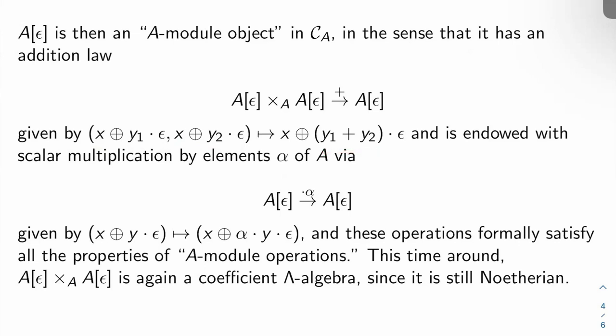And this is also endowed with a scalar multiplication by elements α of A via a map, which we'll call ·α from A[ε] to itself. What does that map do? It sends x ⊕ y·ε to x ⊕ α·y·ε. And these operations do indeed formally satisfy all the properties that module operations should from the definition of module from abstract algebra class.